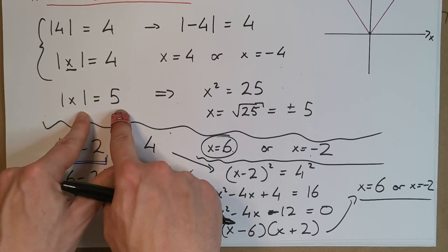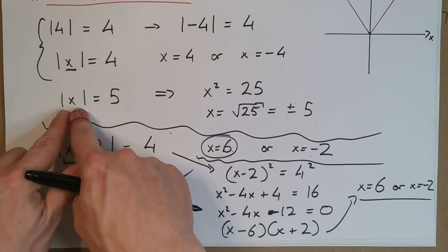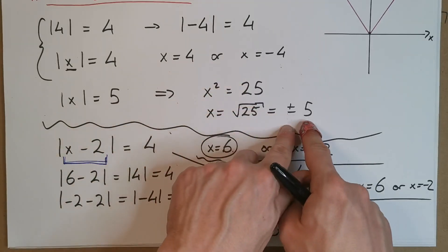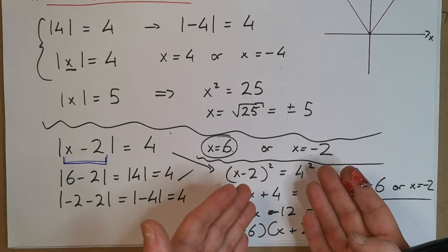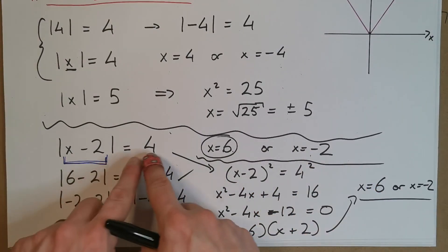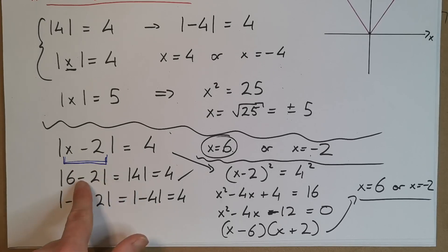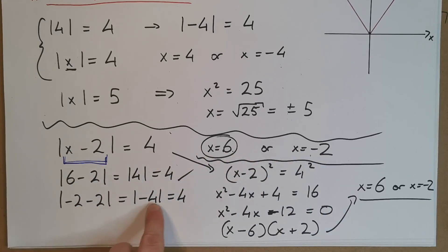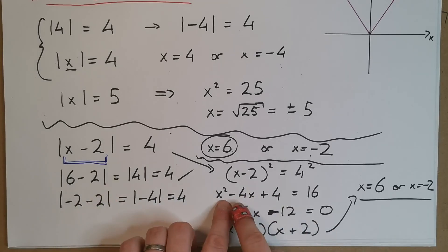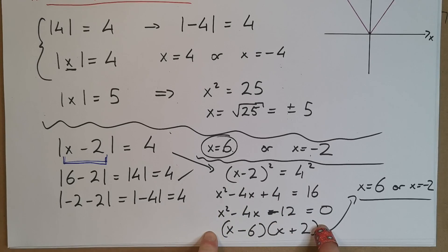Both methods lead to the same solutions. The direct method works by recognising the contents can be plus 4 or minus 4 — so X equals 6 gives 6 minus 2 equals 4, and X equals minus 2 gives minus 2 minus 2 equals minus 4, whose modulus is 4. The squaring method seems long-winded but there are cases where you can't easily see the answers in your head, so we'll do more examples where you'll see when squaring is the easier approach.